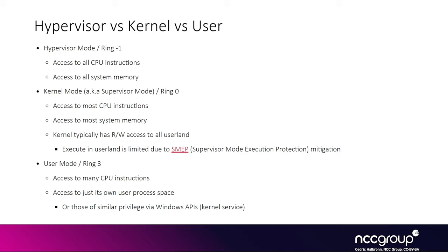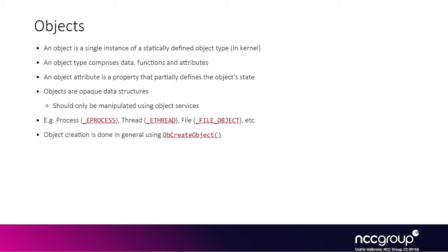The only thing worth mentioning is that the kernel typically can't execute code in userland due to the SMEP mitigation. Even though a user process can't access another process's user space by default, the kernel allows that through Windows APIs and kernel services. Microsoft wants people to think about objects as opaque structures — you just call APIs that deal with these objects without needing to understand what's done internally. But there are exported symbols available when debugging, so you can actually see most of these objects in WinDbg in practice. When you allocate a typical object type like a process, thread, or file, the kernel allocates an object header structure in front of the actual object type.